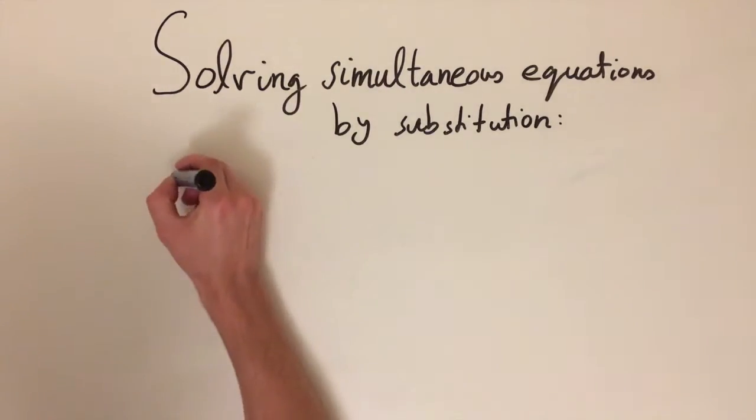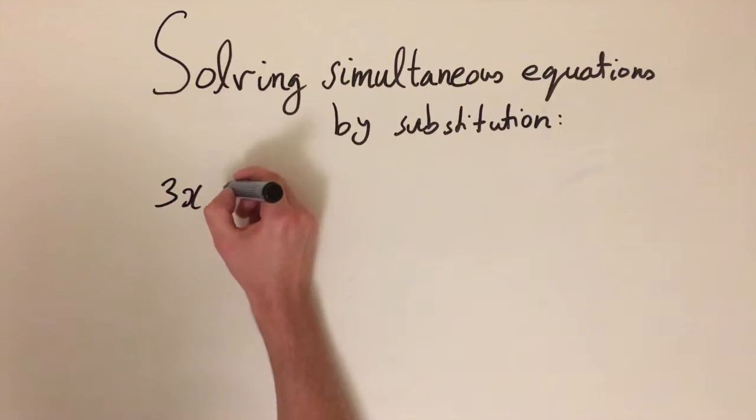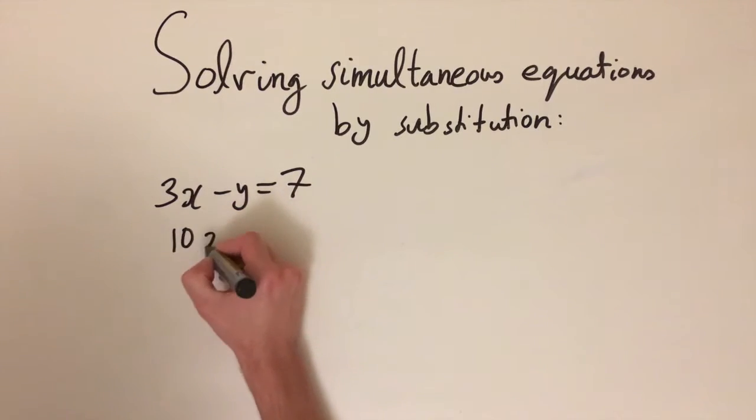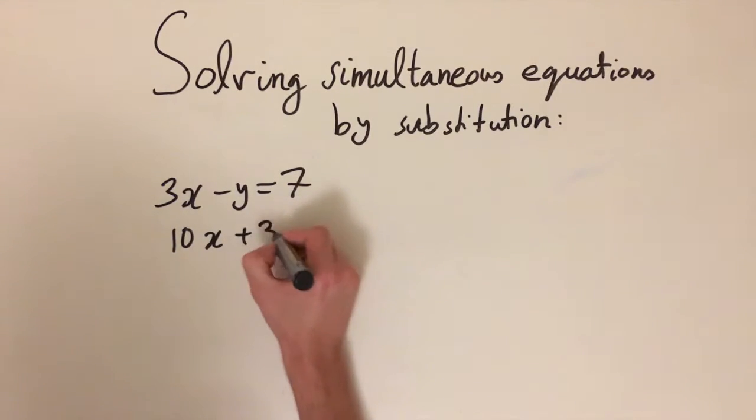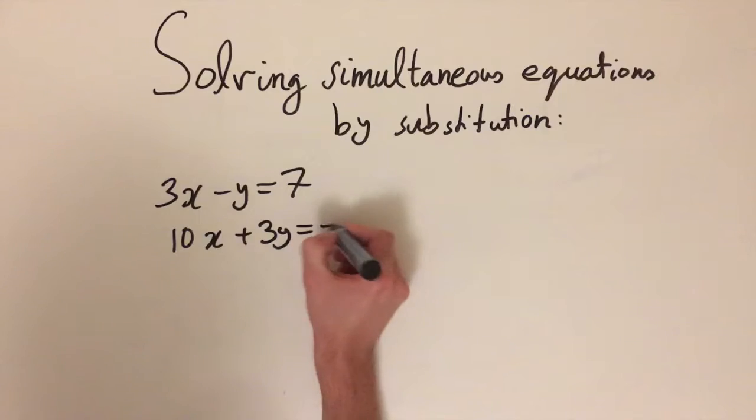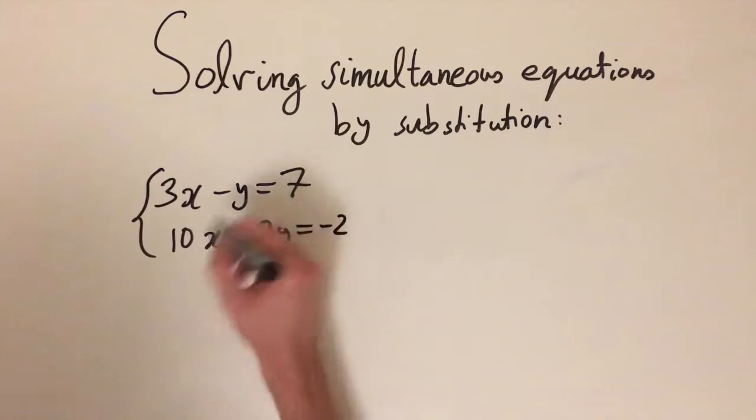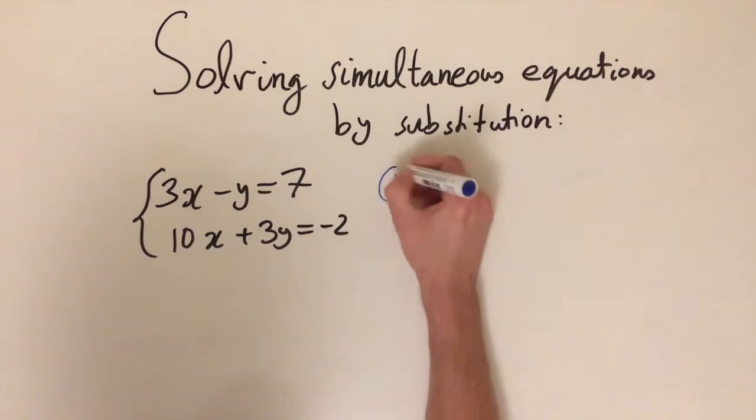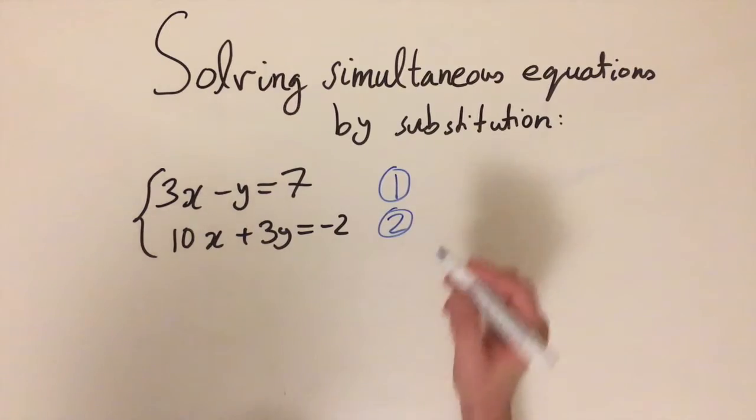Let's do one more example. We're going to do 3x minus y equals 7, that's the first equation, and for the second one we have 10x plus 3y equals minus 2. These are our two linear equations, and we're going to solve them by substitution. Let me write this as equation 1 and this as equation 2.